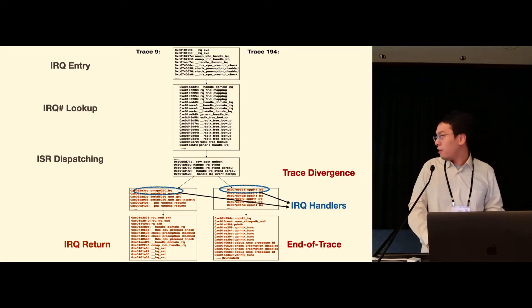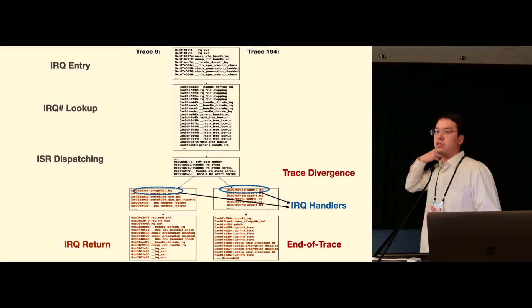And if we look closer at the divergence point here, we can immediately spot that these two functions that are being dispatched are exactly the two IRQ handlers corresponding to each of the traces.